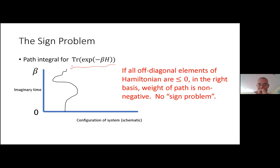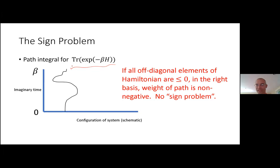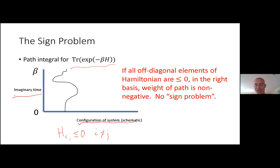You can compute Tr[e^{−βH}] by writing down a path integral in imaginary time. An important property: if all the off-diagonal elements of the Hamiltonian are non-positive in a particular basis — meaning H_{ij} ≤ 0 for i≠j — then the weight of all paths is non-negative. So it becomes a sum over non-negative weights, which is crucial for Monte Carlo methods.